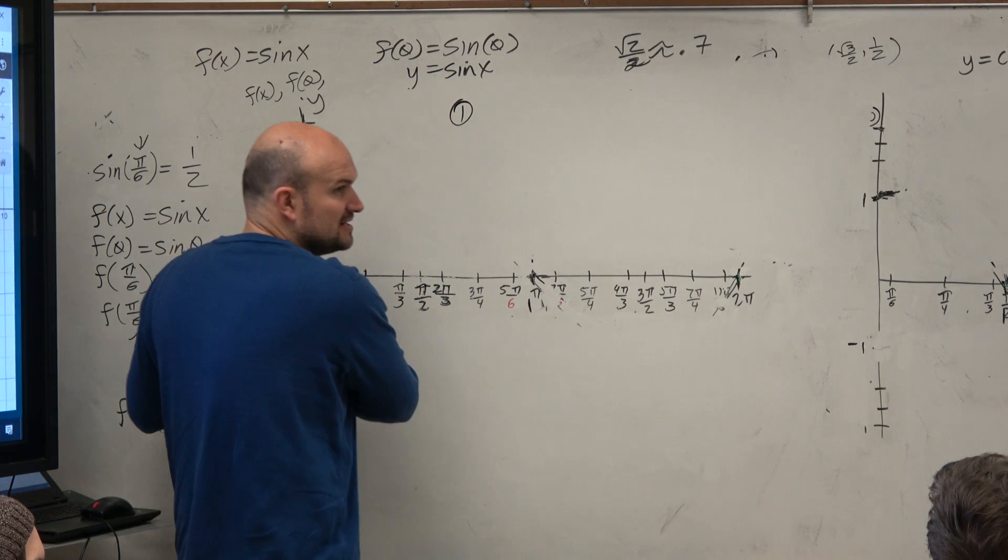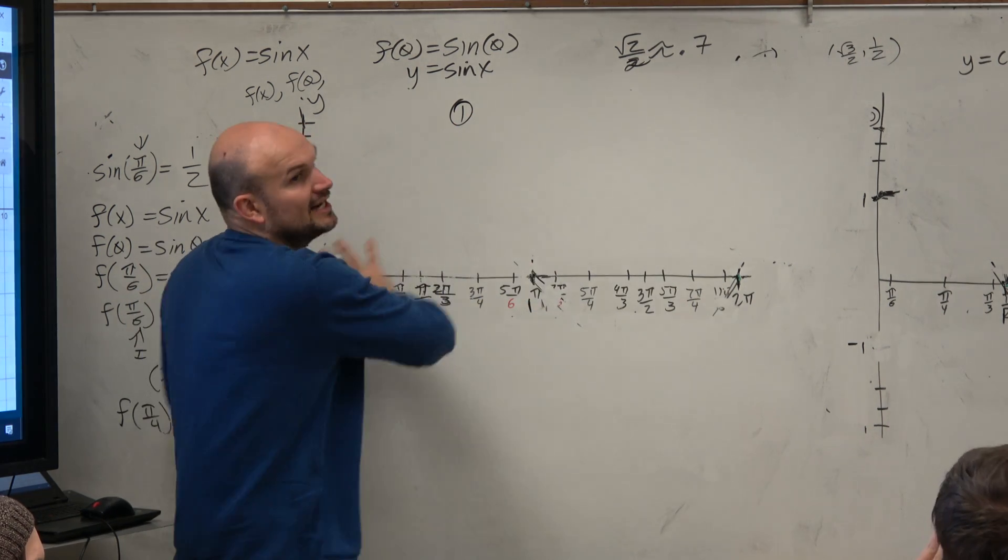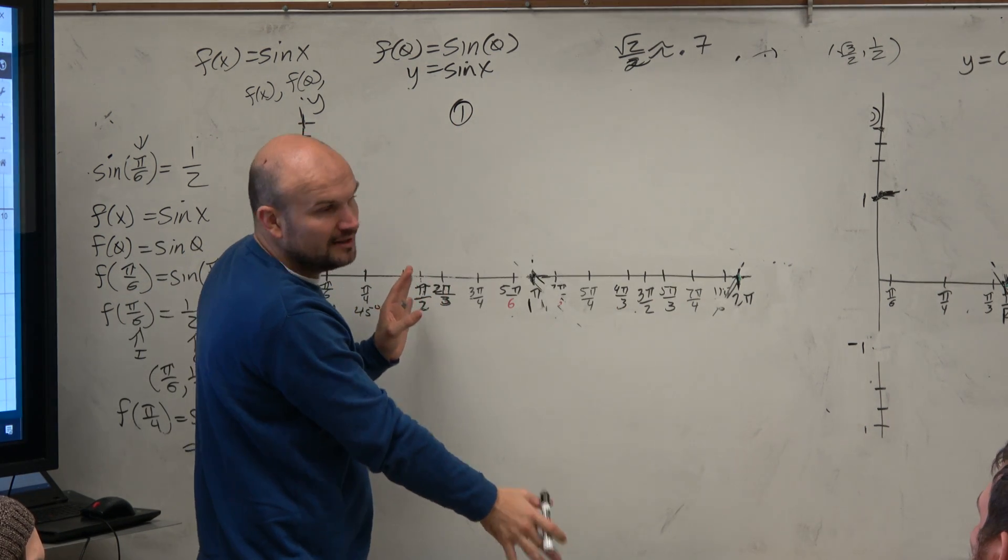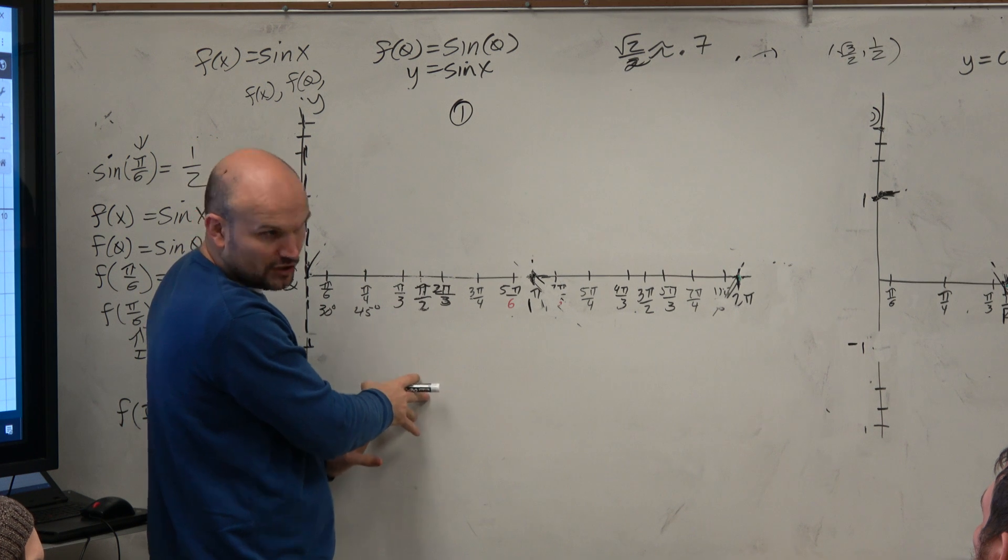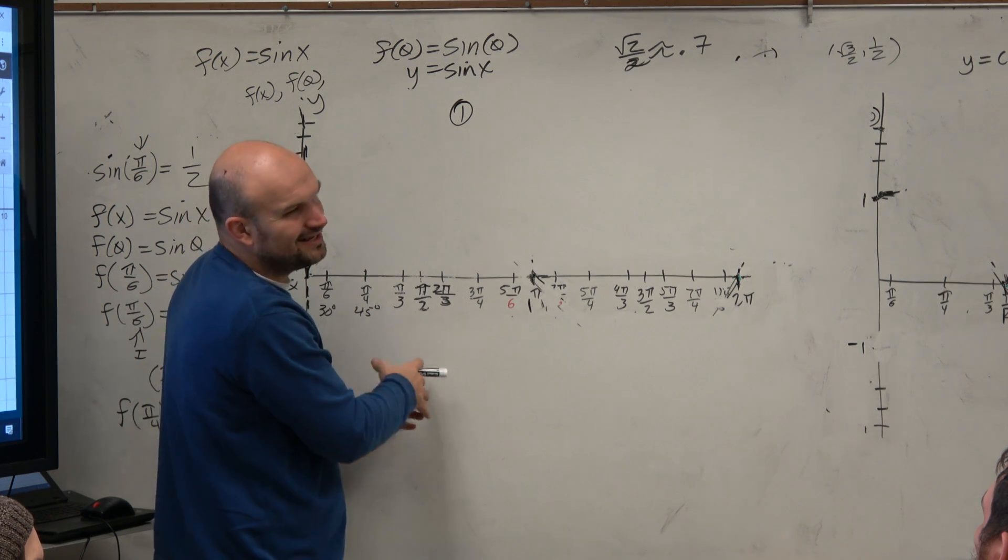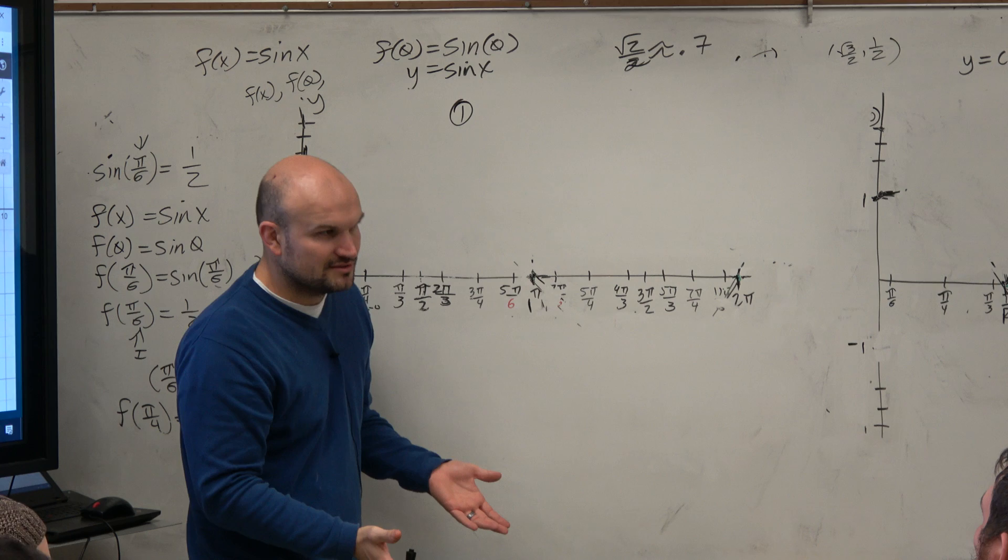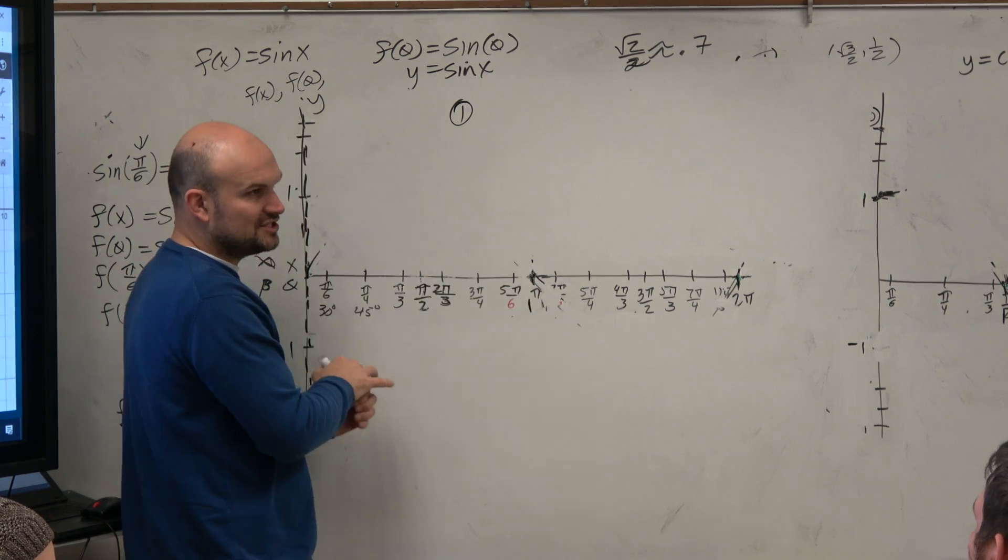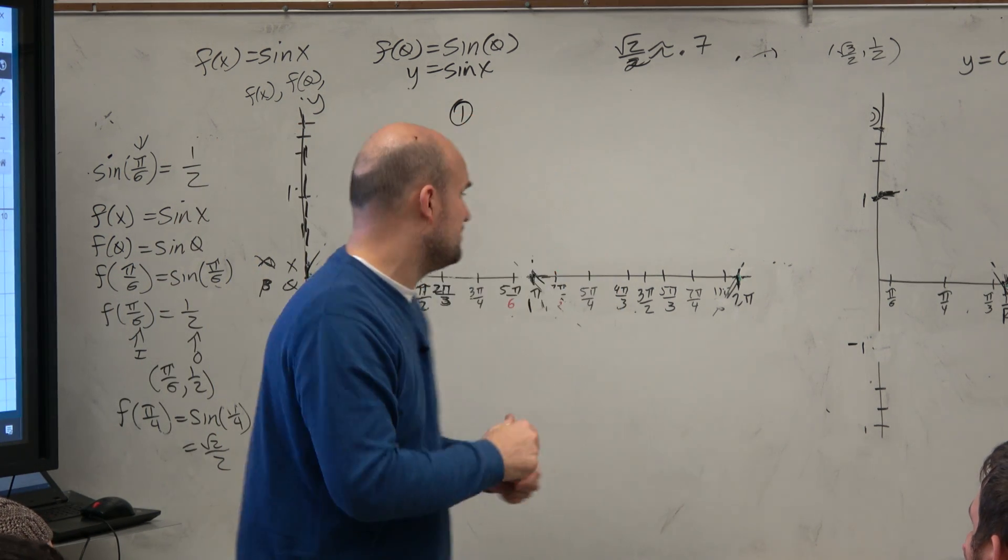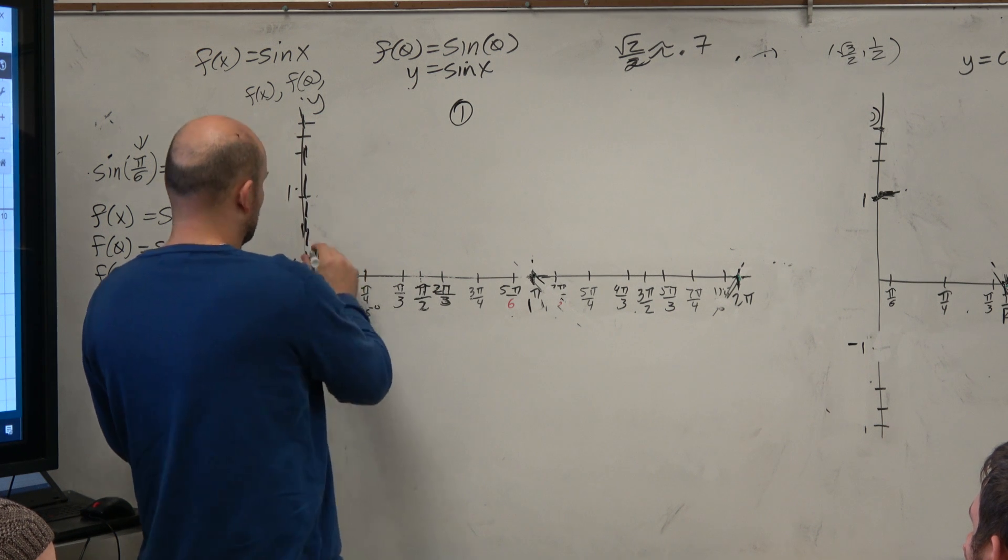Now, last class period, we spent about 20 minutes plotting all the points for sine. We could do that for cosecant, but we already did it once. Why do it again? So let's just try to understand conceptually of what we do understand about the sine graph.